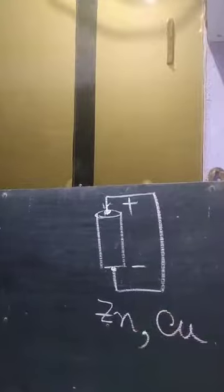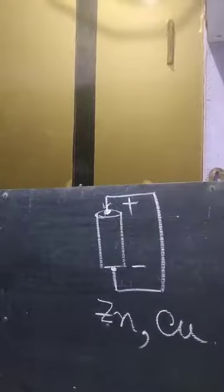In the case of a galvanic cell, there are two electrodes in the form of rods — one is zinc and another is copper. So for the galvanic cell, the electrodes will be zinc and copper. The electrolyte is the substance where free ions are present, because of which it can conduct electricity. In the galvanic cell, the electrolytes used are zinc sulfate and copper sulfate.